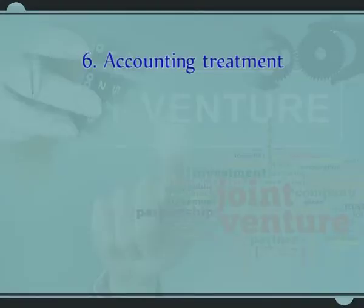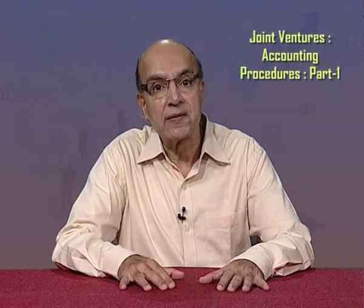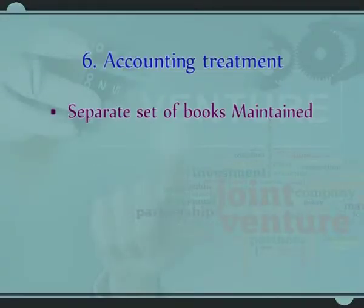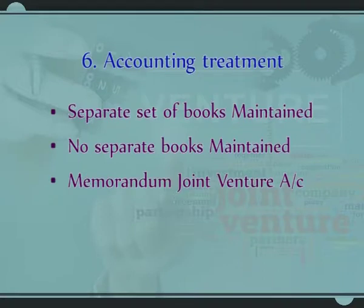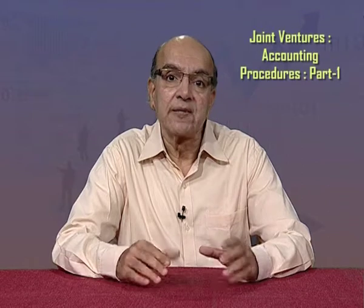Point number 6: Accounting treatment. The basic objective of accounting procedures in joint venture business is to find out the profits or losses arising out of the business. There are three methods of accounting treatment: Number 1 — separate set of books maintained; Number 2 — no separate books maintained; and Number 3 — memorandum joint venture account.